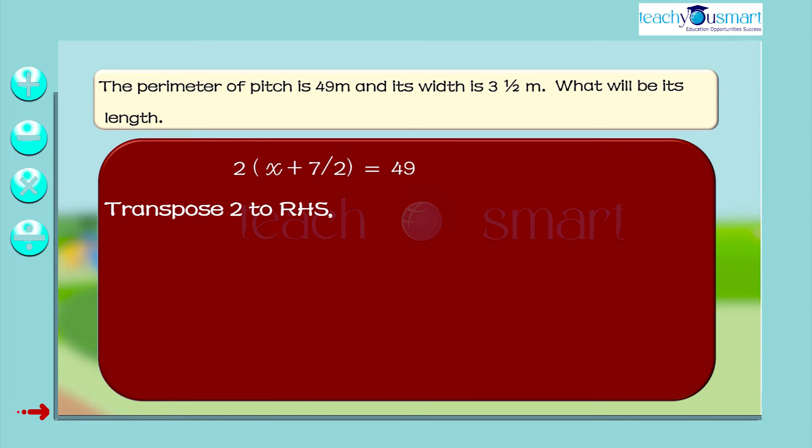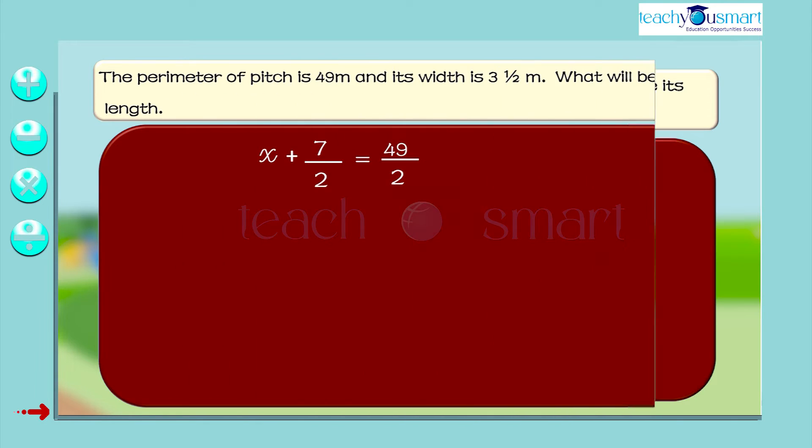Transpose 2 to RHS. x plus 7 by 2 equals 49 by 2.